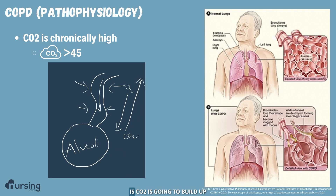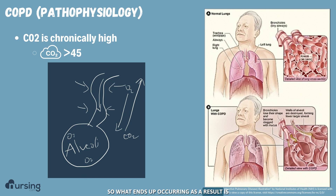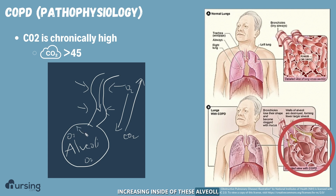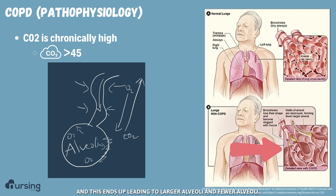As a result, CO2 is going to build up and we're also going to have continual buildup of O2 in these alveoli as we're getting more pressure in but having difficulty getting that pressure out. So what ends up occurring is you actually have destruction of the walls of the alveoli. Think about it as a hyperinflated balloon — more and more O2, more and more pressure increasing inside these alveoli, pushing on the walls, eventually leading to destruction of the alveolar wall, resulting in larger and fewer alveoli.